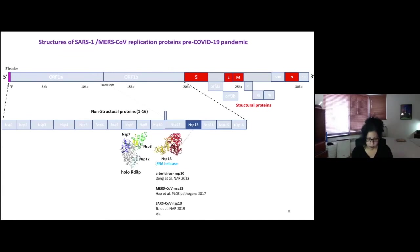The next player that I'm going to focus on is the helicase, also called NSP13. A lot of structural biology has been done first in the arterivirus, MERS, SARS-CoV-1.